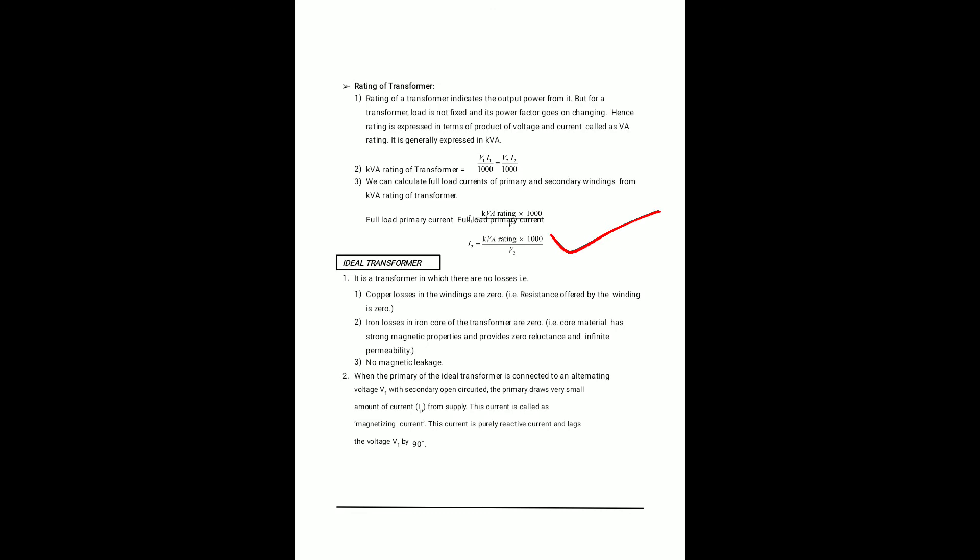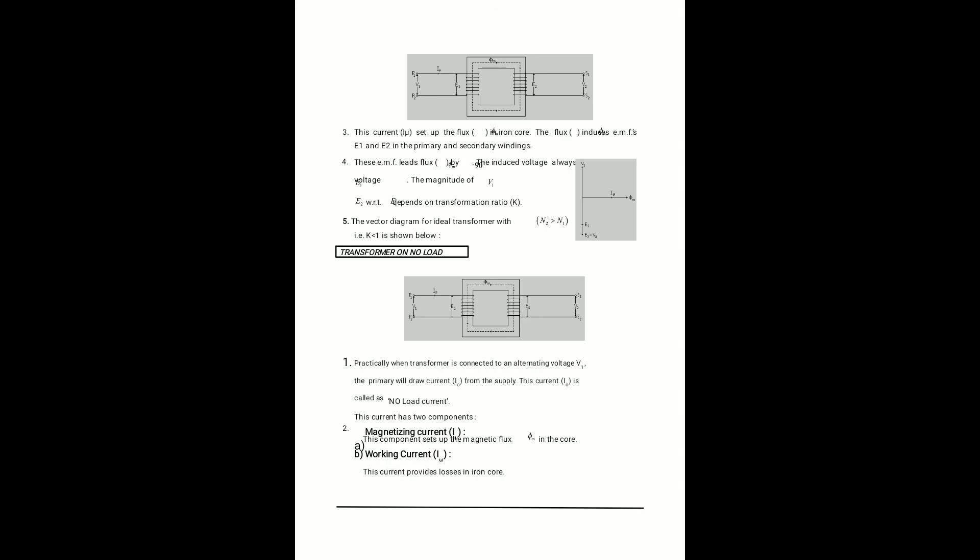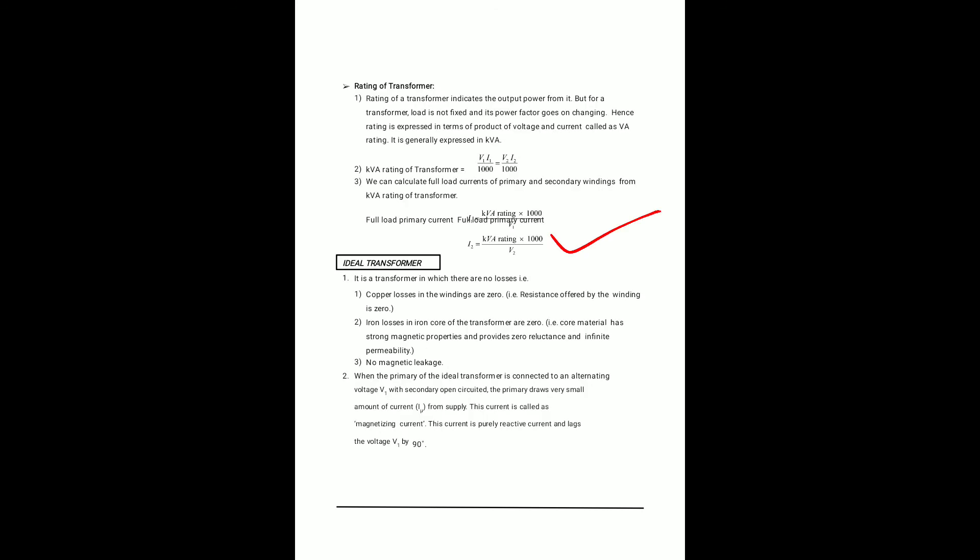An ideal transformer is one where losses are not considered. The copper loss in the winding is zero — resistance offered by the winding is zero. Iron core loss is also zero, meaning a strong magnetic material is used. There is no magnetic leakage. When the primary of an ideal transformer is connected to alternating voltage V1 with the secondary open-circuited, the primary draws a very small magnetizing current that is purely reactive and lags V1 by 90°.